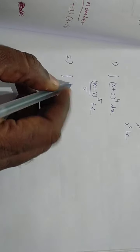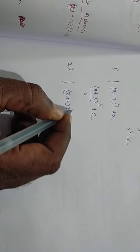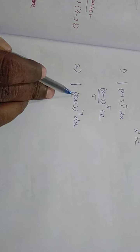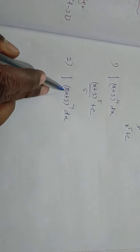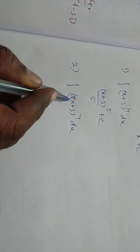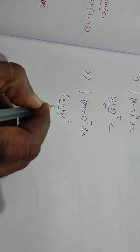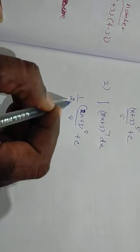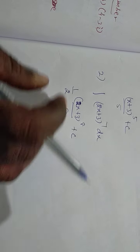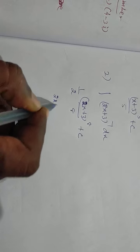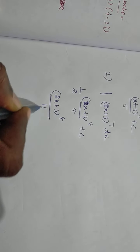Second example: the integration of (2x plus 3) the whole power 7 dx. The difference here is instead of just x, we have 2x, meaning x has a coefficient of 2. When the coefficient of x is 2, we divide by that coefficient, giving 1 by 2. So the answer is: (2x plus 3) whole power 8 by 2 times 8, which is 16, plus c.